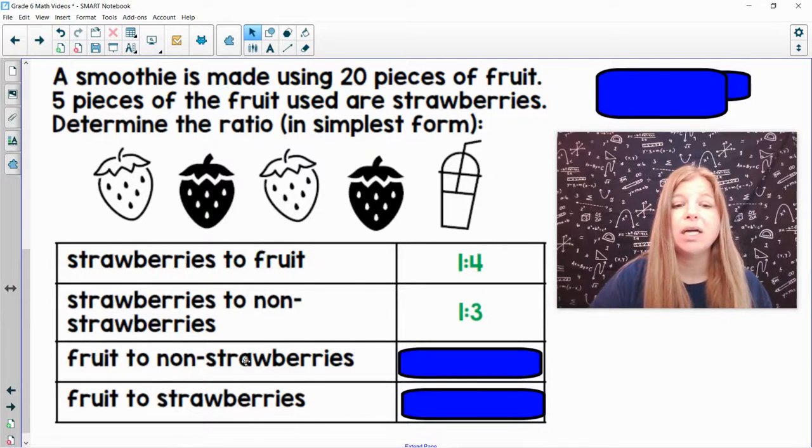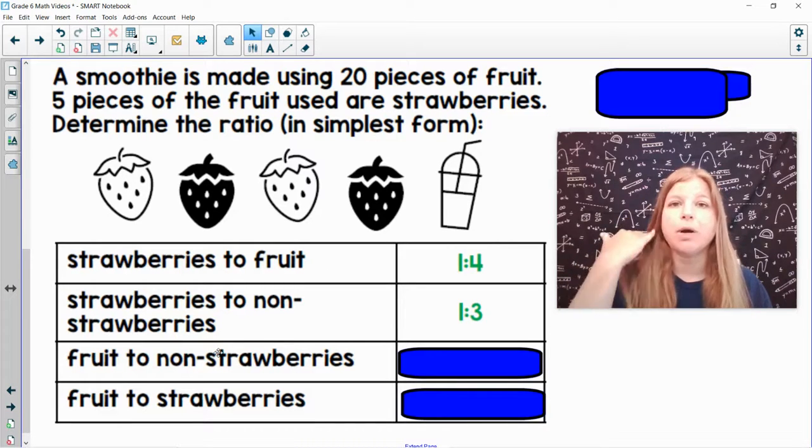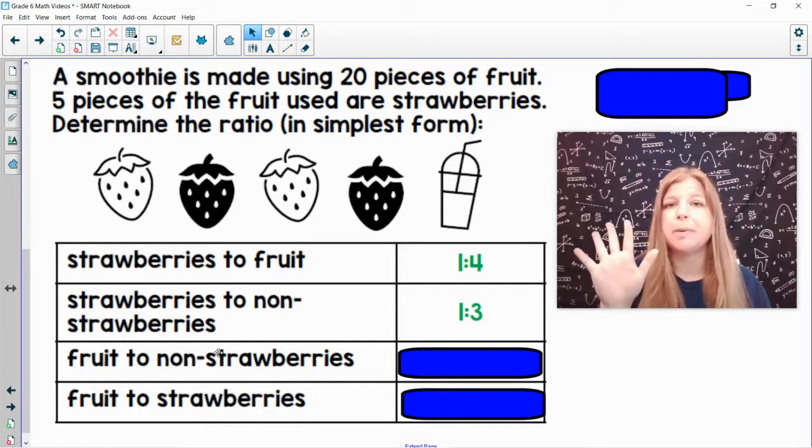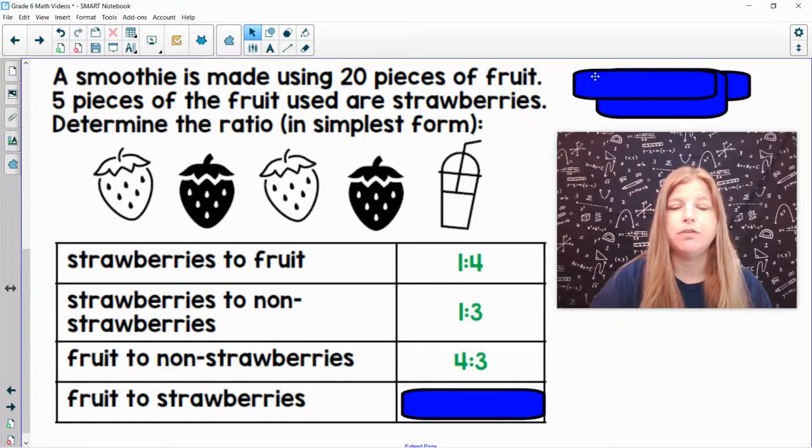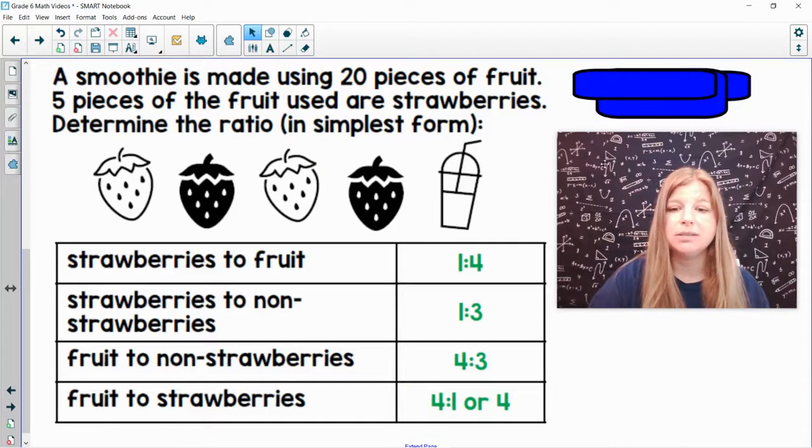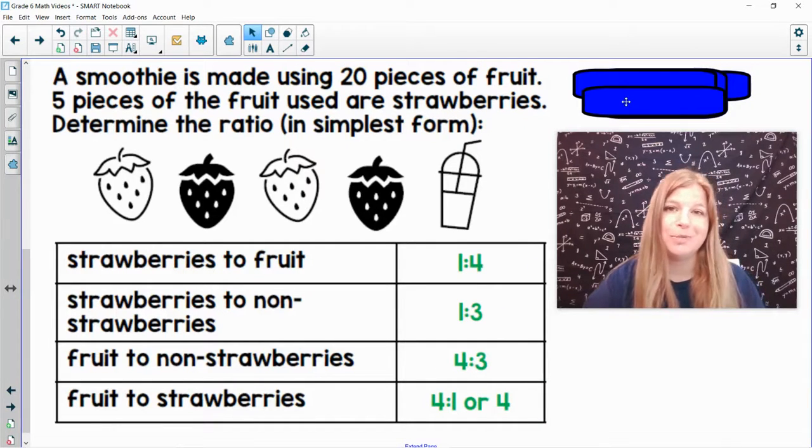Fruit to non-strawberries. So there's 20 total pieces of fruit. The non-strawberries we just said from the previous problem is 15. Twenty to 15. They're both divisible by five. So 20 to 15 becomes four to three. And the last one. Fruit to strawberries. Twenty pieces of fruit to five pieces of strawberries. Twenty to five. Twenty over five simplifies to four over one, which is just four. So either ratio would be correct.